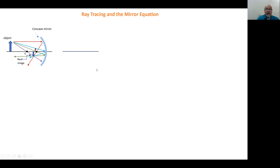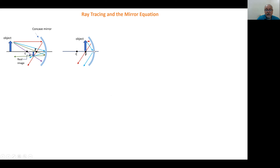Now let's see what happens when we place the object exactly at the focal point. The ray parallel to the optical axis is reflected toward the focal point, and the ray going to the vertex is reflected at the same angle. But in this case these two reflected rays are parallel — they never meet — so no image is formed. We say the image is at infinity when the rays are parallel.